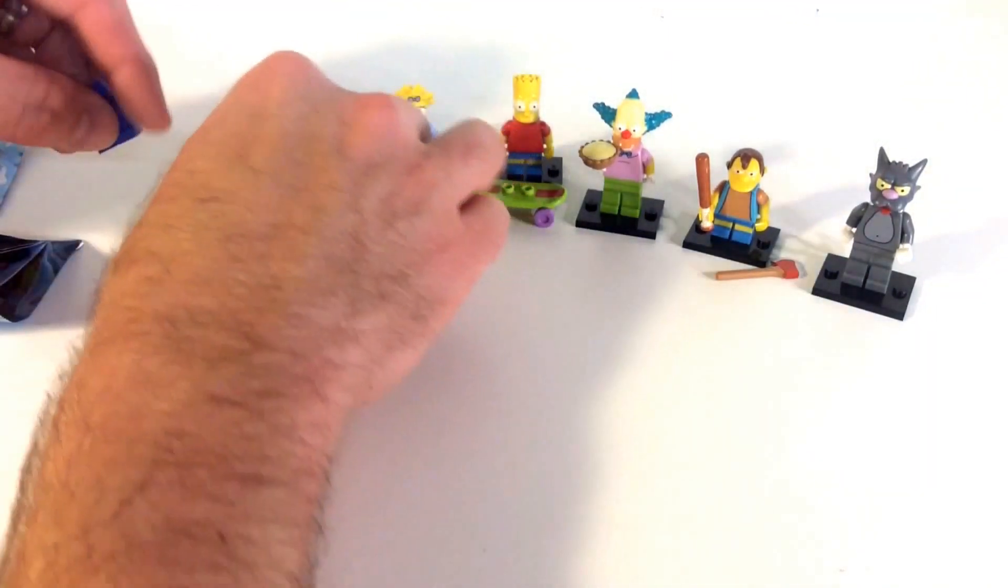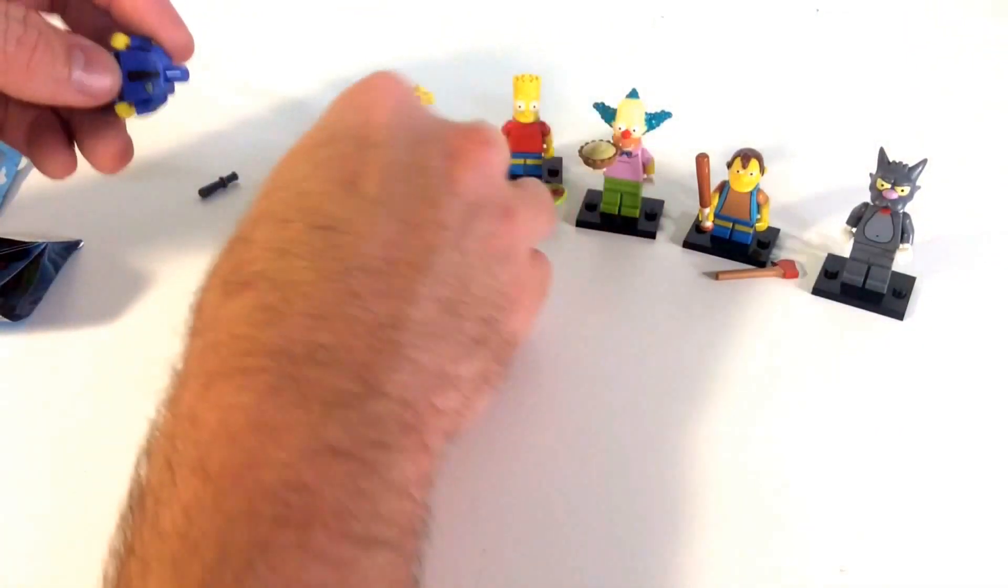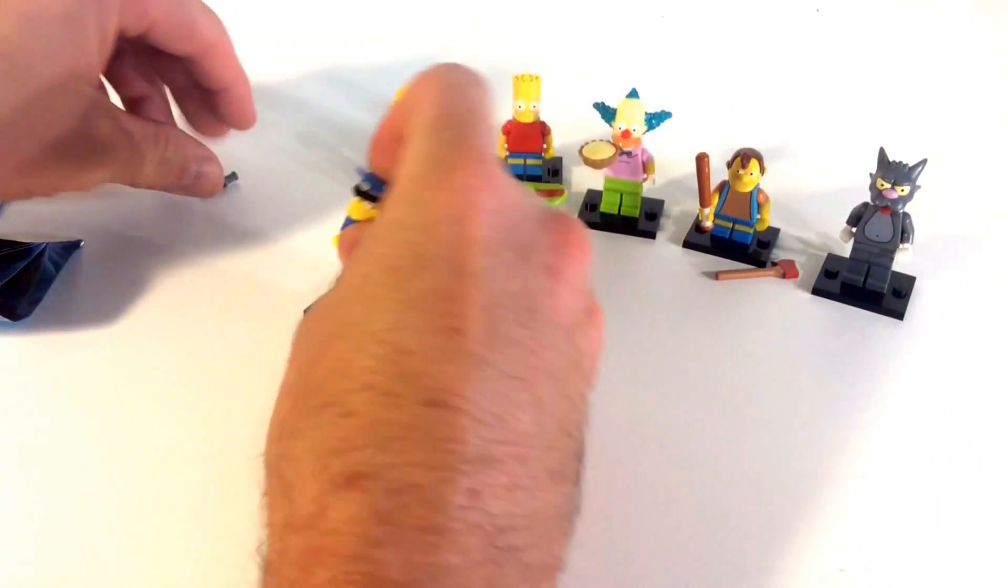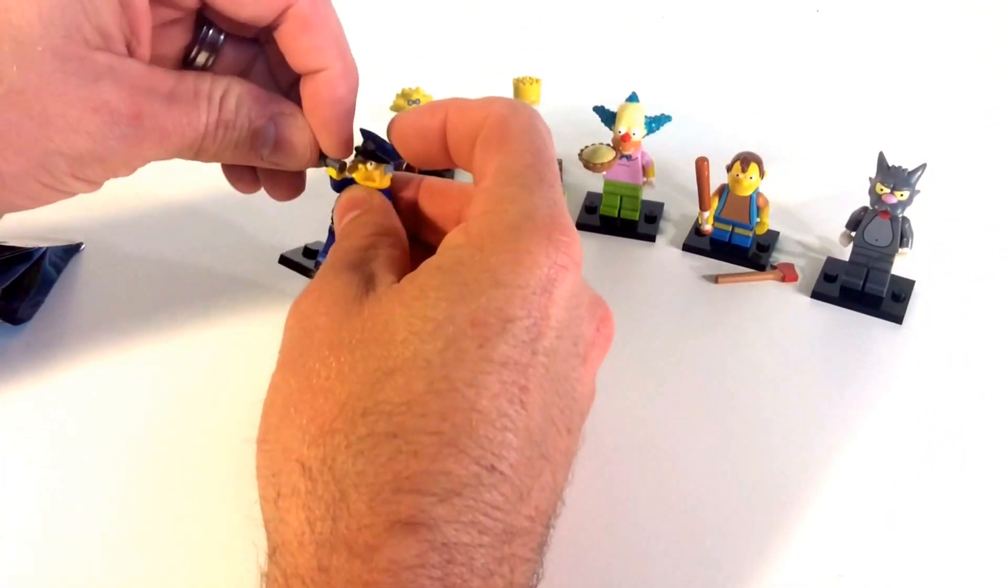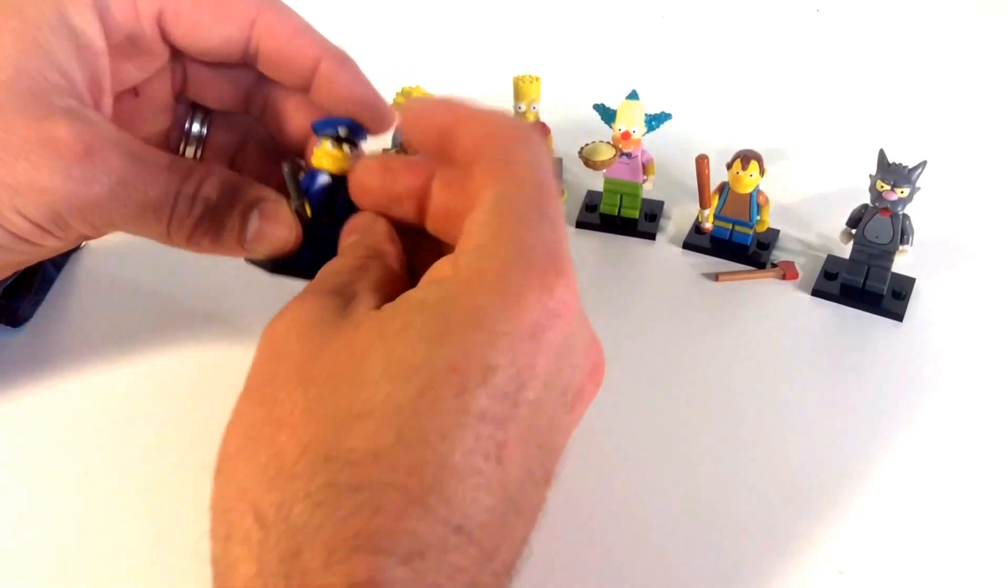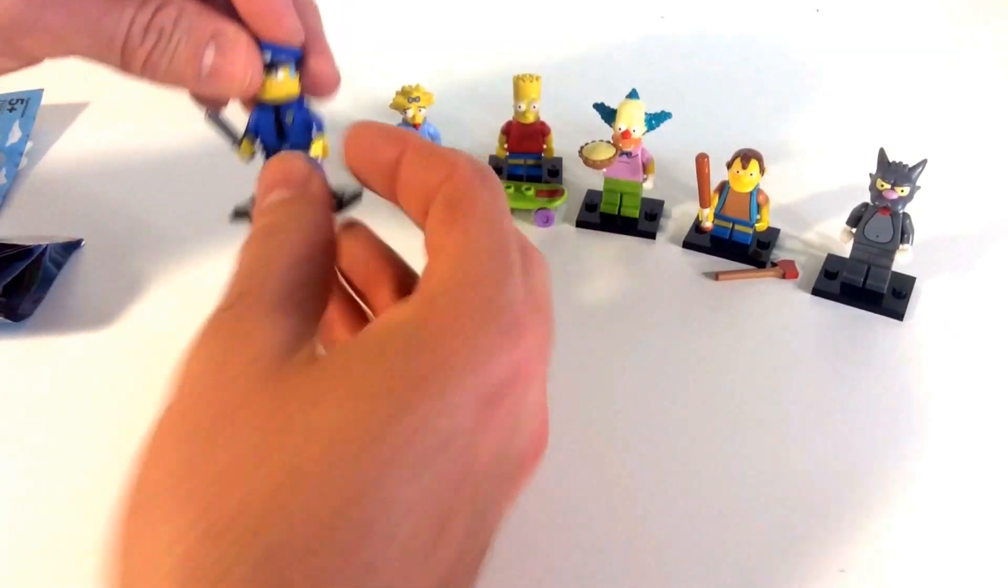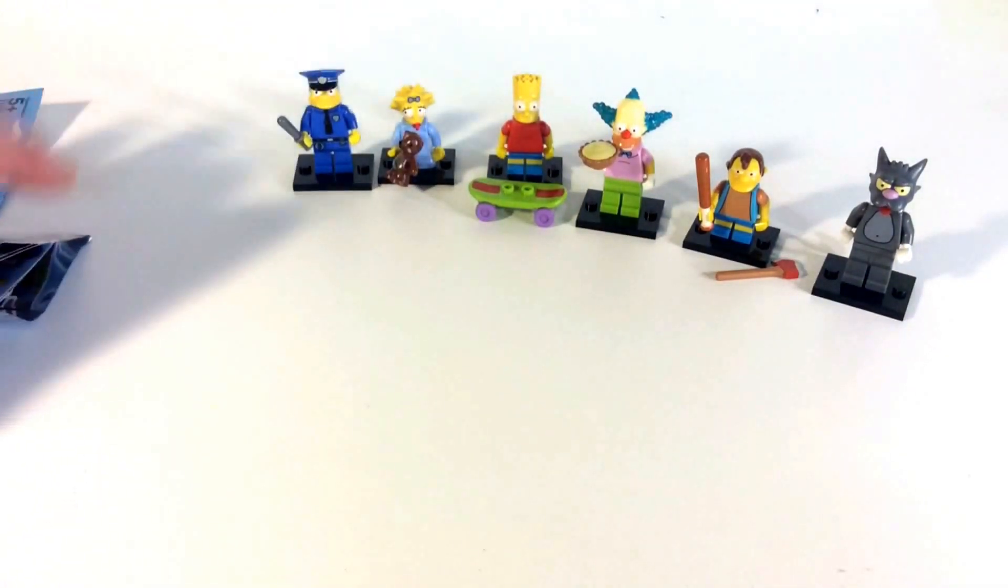And here we got Chief Wiggum, I know that one I think. And he's an easy one to find too with that big helmet, or hat, big police hat.